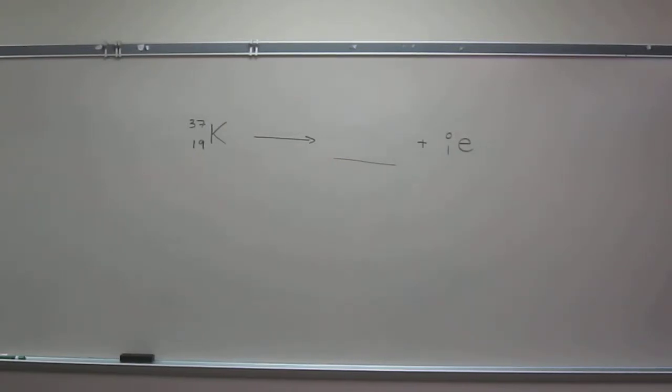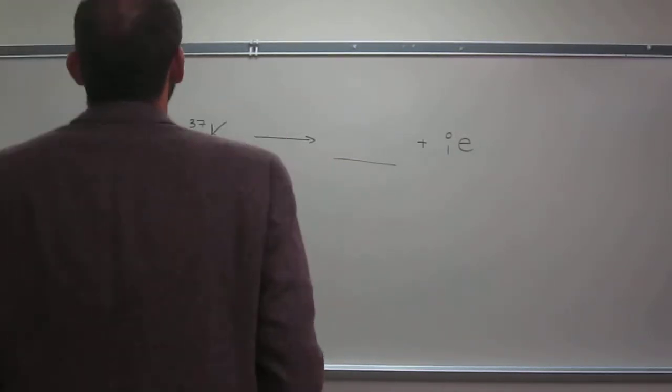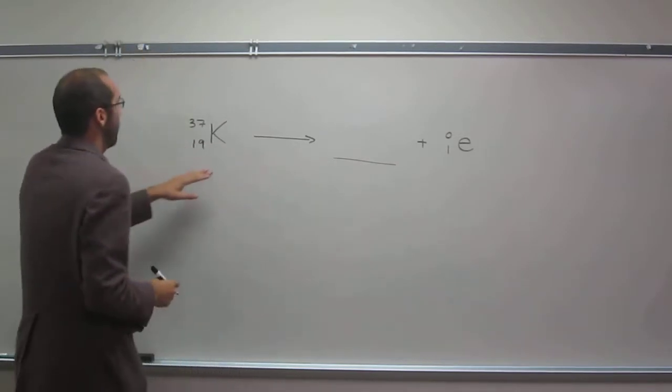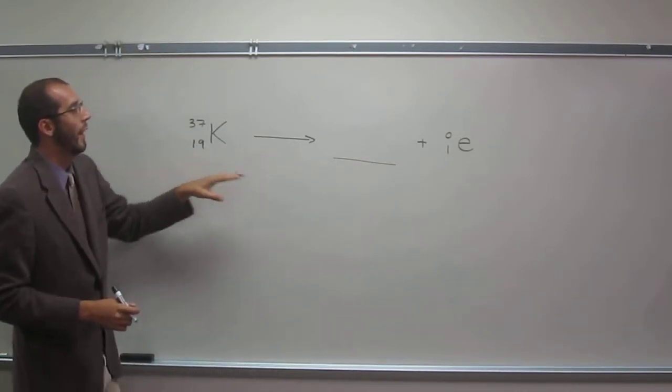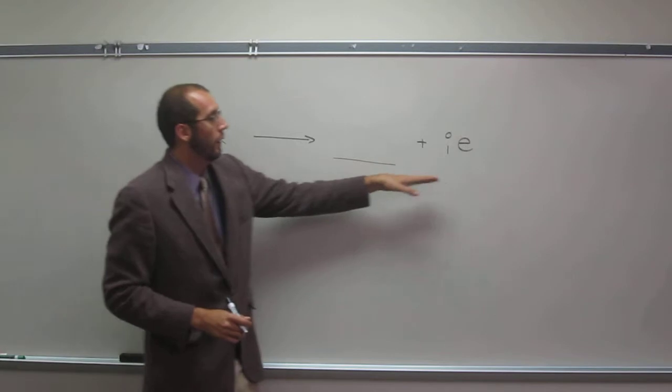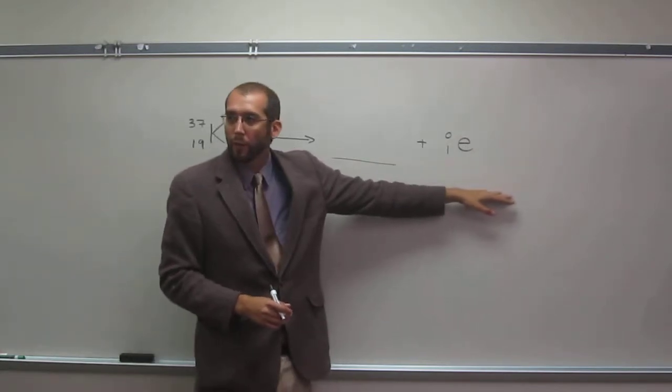OK, so let's try one of these radioactive decay problems. We've got potassium-37 decaying to some particle and some decay particle here.